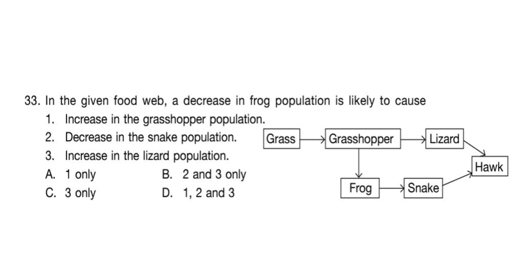Question 33. In the given food web, a decrease in frog population is likely to cause: 1. Increase in the grasshopper population. 2. Decrease in the snake population. 3. Increase in the lizard population. The answer is Option D: 1, 2 and 3 — all these statements are true.